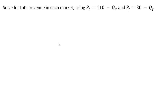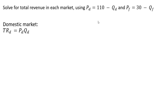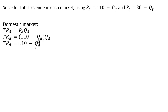The next step is to solve for total revenue in each market using those inverse demands. For the domestic market, total revenue is price times quantity. Substituting 110 minus Q for the price and multiplying through, we get total revenue equals 110Q minus Q squared. Taking the derivative of that will give us marginal revenue.